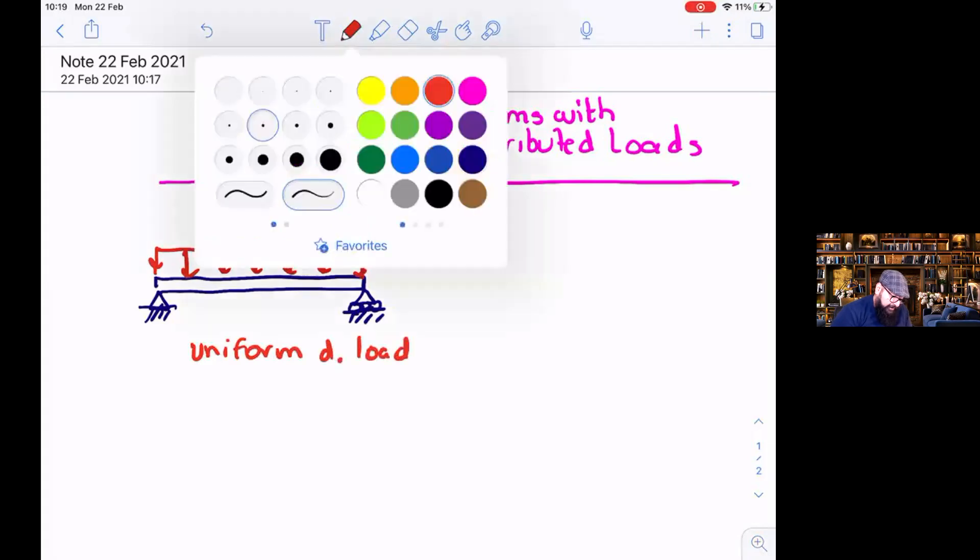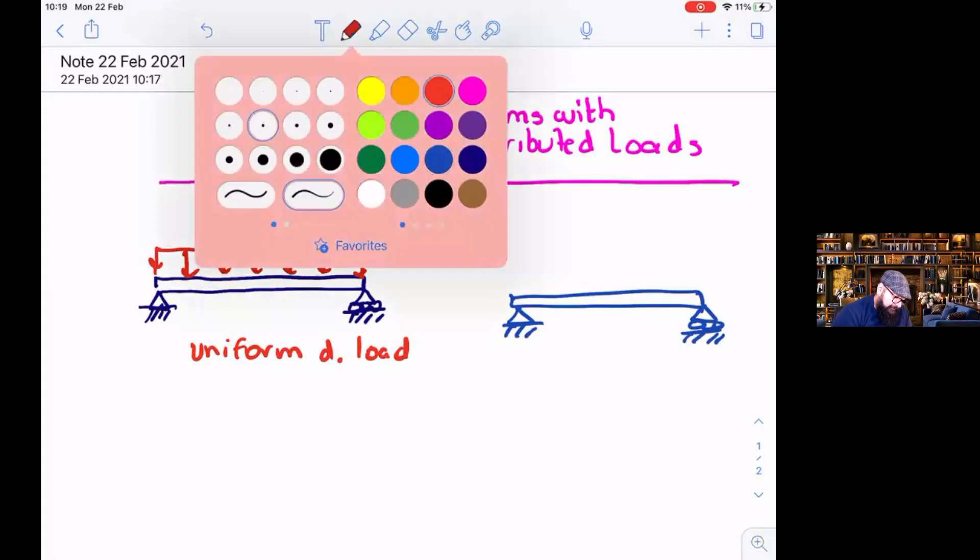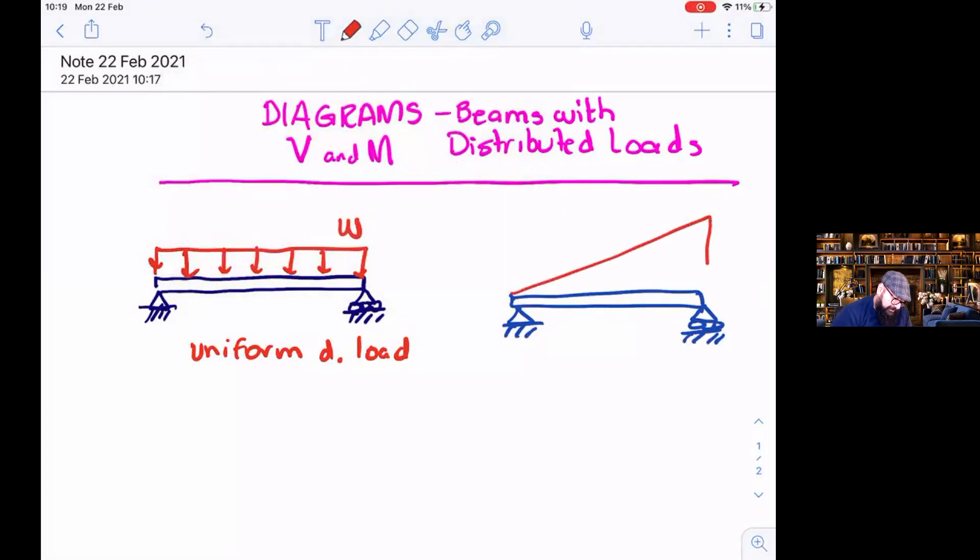And then we have another one that is a linear load. For instance, in a beam like this, we may have something like this. There's a linear variation here, the value is zero and here we may have a value, final value. This is a linear one.